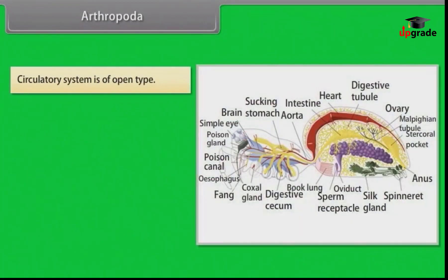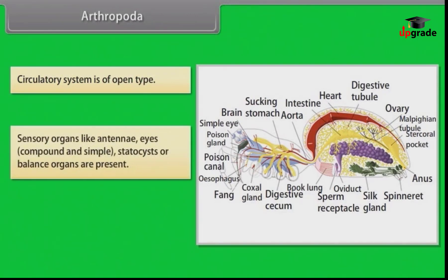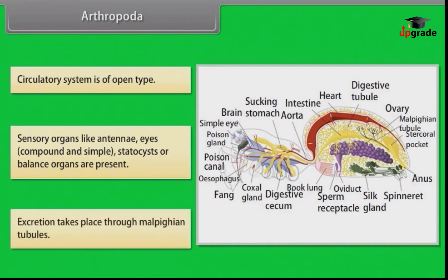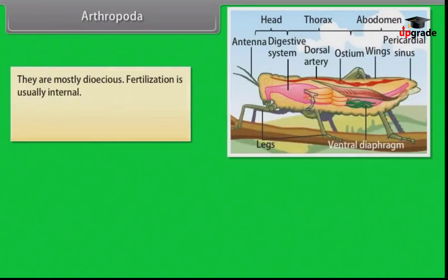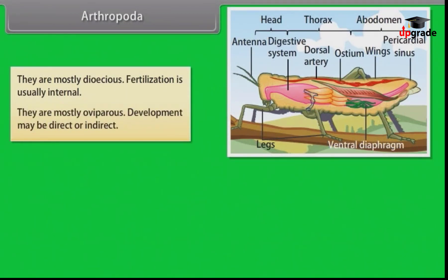The circulatory system is of open type. Sensory organs like antennae and eyes (compound and simple) are present. Statocysts or balance organs are present. Excretion takes place through Malpighian tubules. They are mostly dioecious. Fertilization is usually internal. They are mostly oviparous. Development may be direct or indirect.